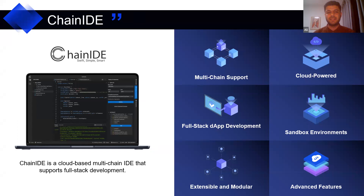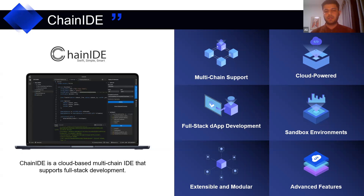You can create a full-stack DApp using Chain IDE. You can create your front-end using front-end frameworks like React, Vue, and other front-end frameworks, and your back-end using Solidity, Rust, Cadence, or different programming languages. It supports multiple blockchains including Ethereum, BNB Chain, Polygon, Conflux, Dfinity, and many others. We also support sandboxes — you can create a cloud-based Truffle environment or Ganache. You don't need to install anything on your local server; you can do everything within Chain IDE.